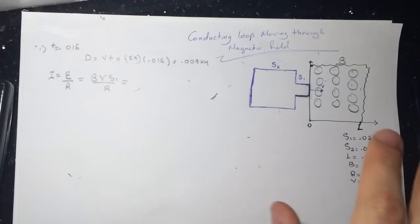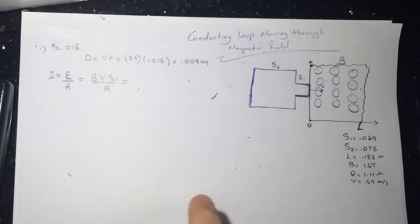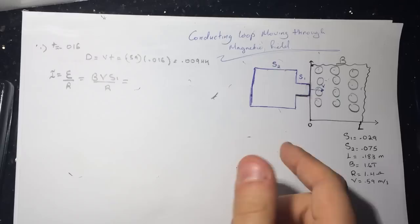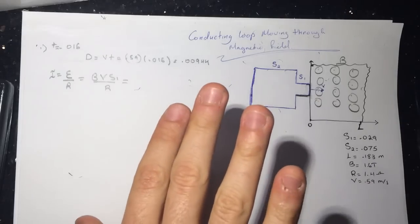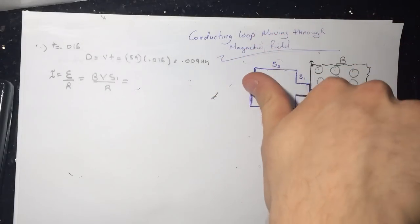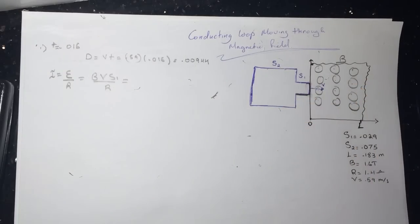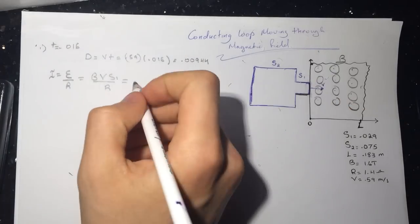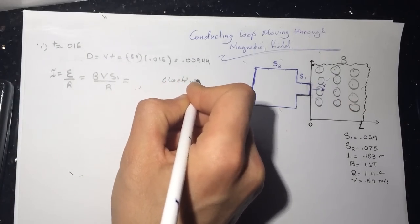It will induce a current to produce a magnetic field that opposes this one against it, which is it will produce axes. So to produce axes, we need a current that's going clockwise to make our thumb pointing into the screen. So it's going to go clockwise.